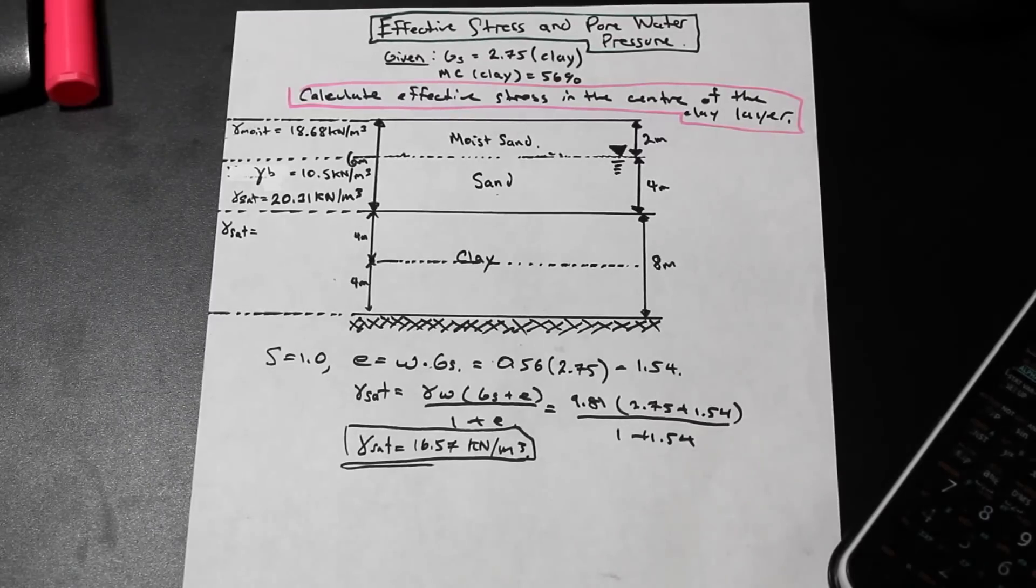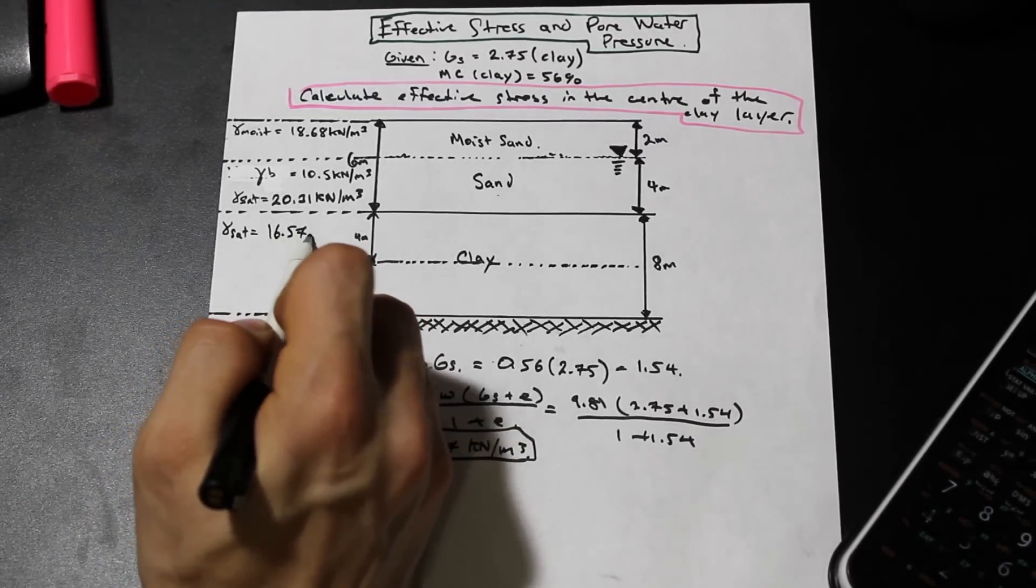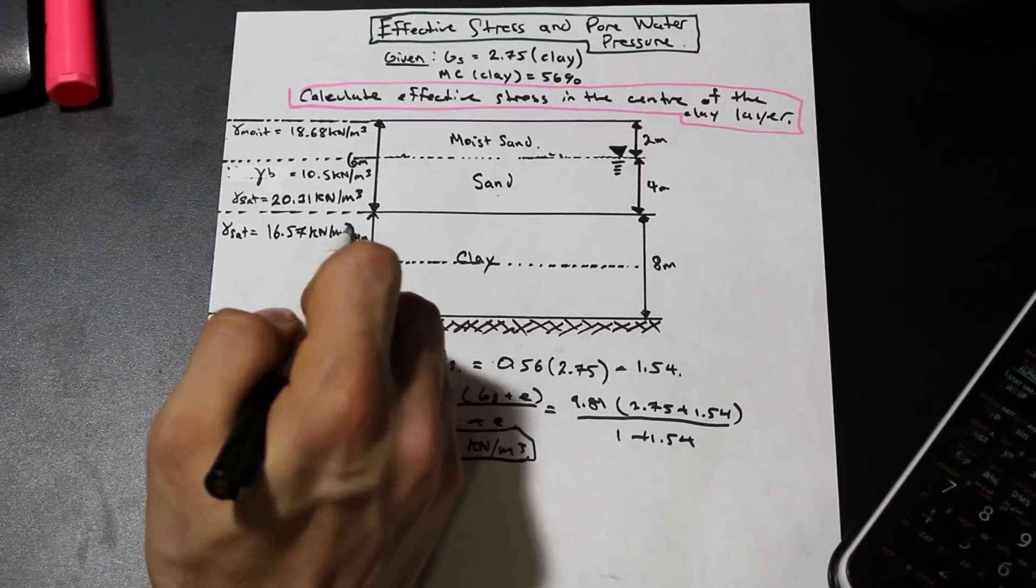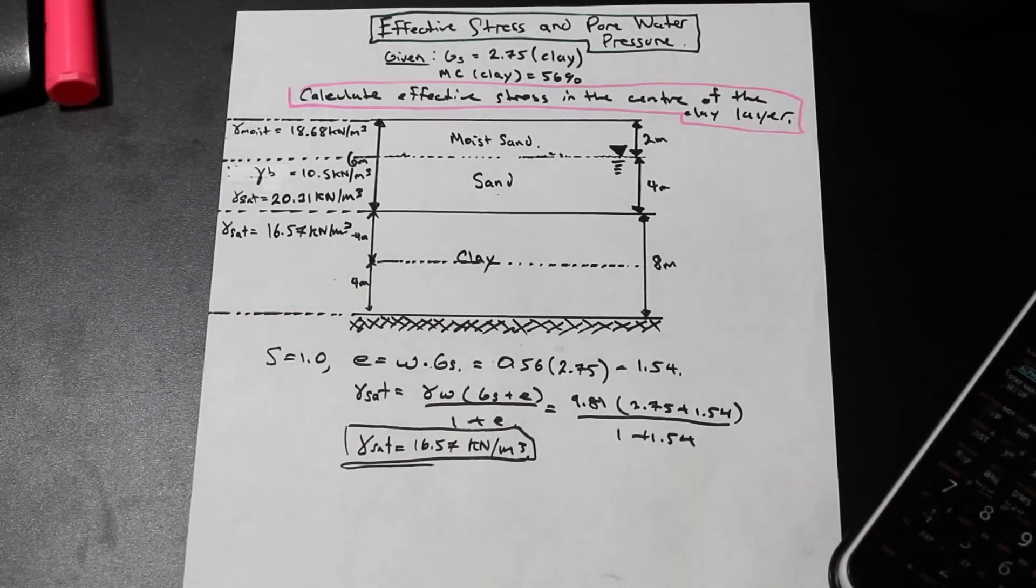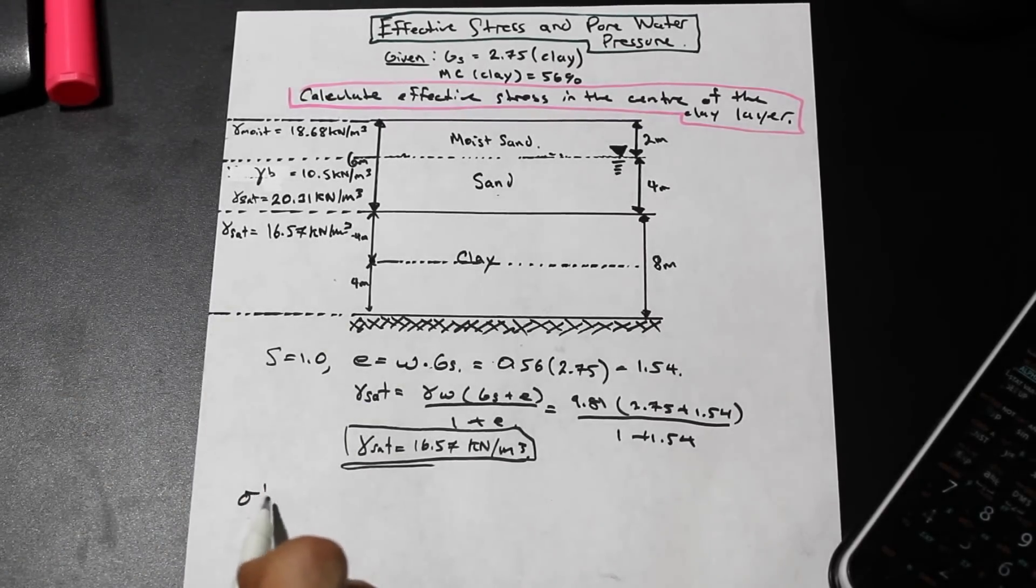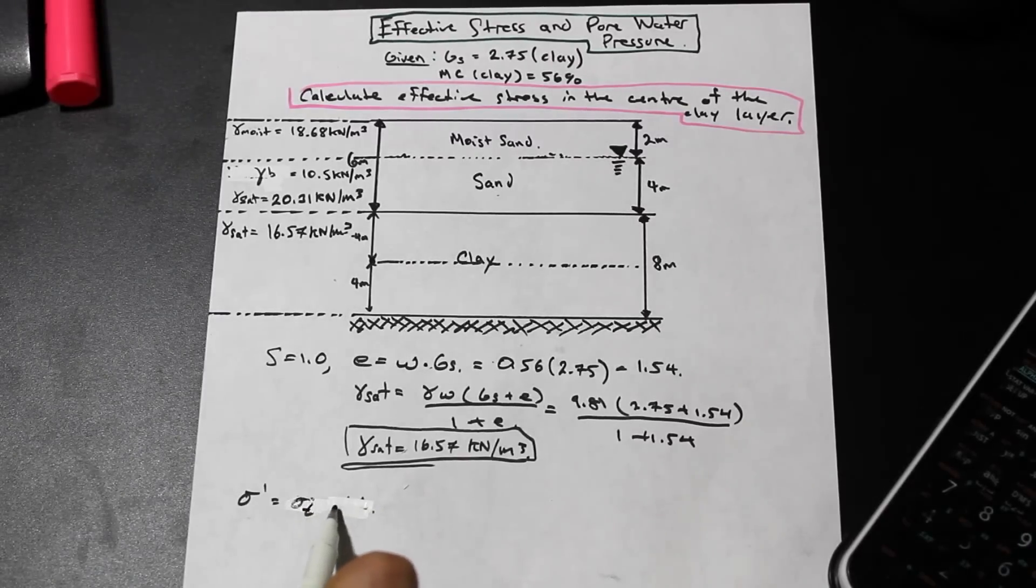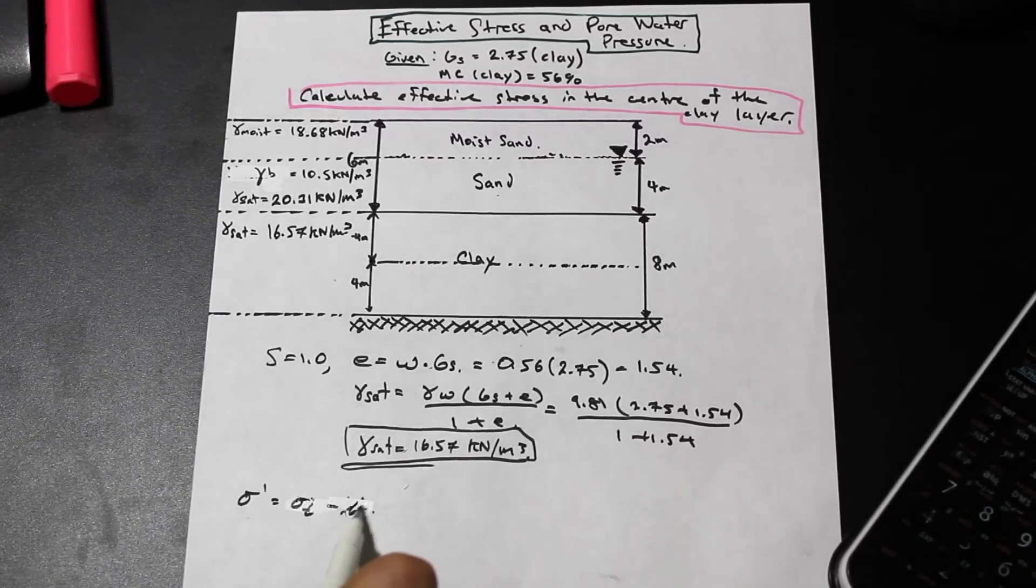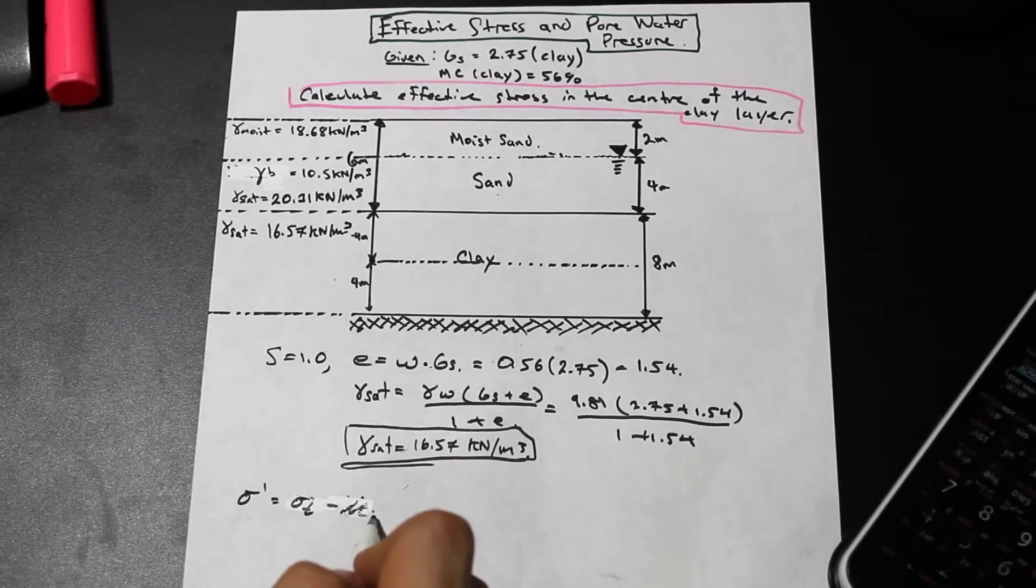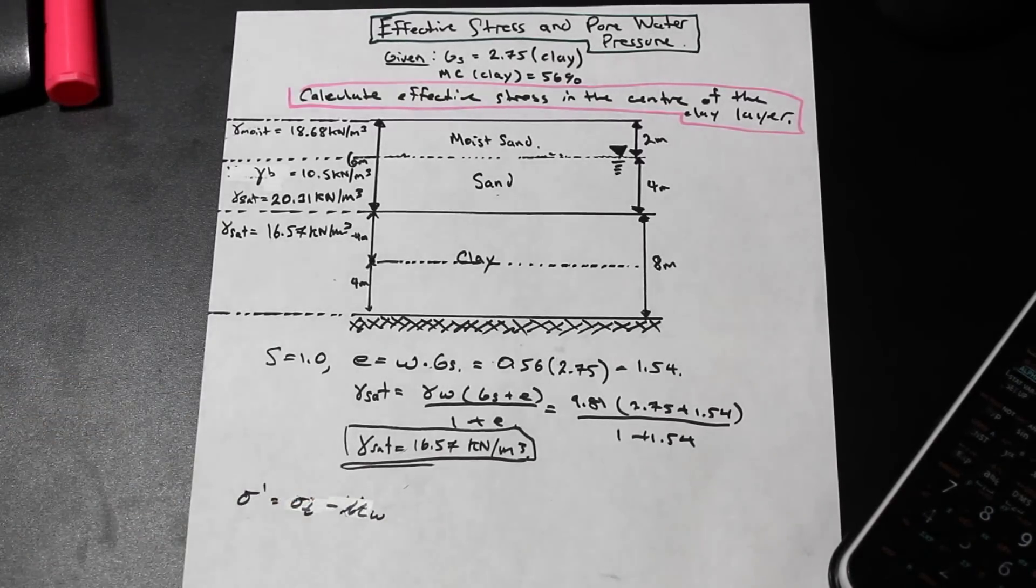So now we can go ahead and we can start to solve for the effective stress. And I'm going to give you the formula for effective stress, and we can talk about it, and then we can do it. So the effective stress formula, which we're going to label as sigma prime, is equal to the total stress minus the pore water pressure. So that's designated by mu. We're going to call that mu w. So sigma t minus mu w.